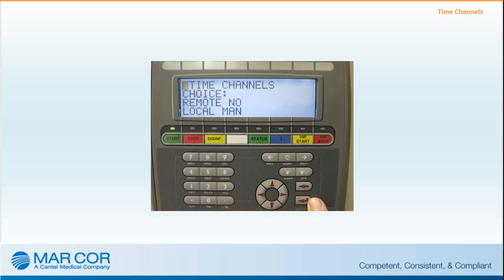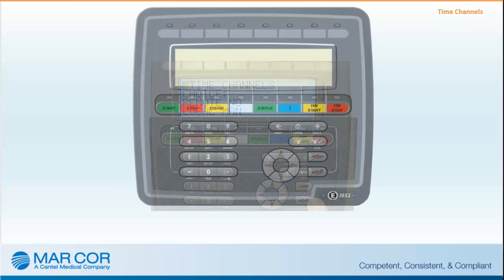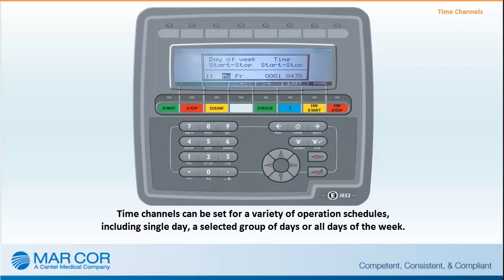The CWP can be operated in two different modes: auto start mode and manual mode. Auto start mode is the preferred method of operation as it allows for nightly heat disinfection and daily startup and shutdown of the RO. The auto start mode operates via time channels that allow for automatic heat disinfection of the RO, start, and stop based on times chosen for clinic operation. Time channels minimize operator interaction. If the CWP has been set to operate via time channels, the start time is typically set a minimum of 30 minutes prior to staff arrival, allowing for startup and a mandatory 15-minute rinse flush.